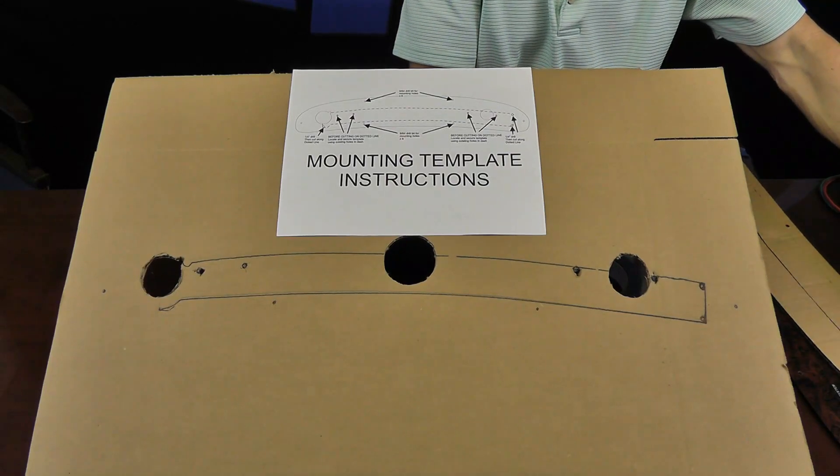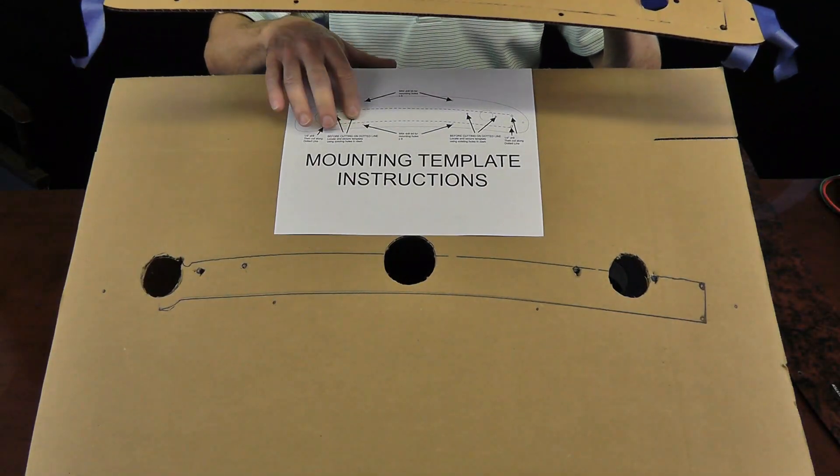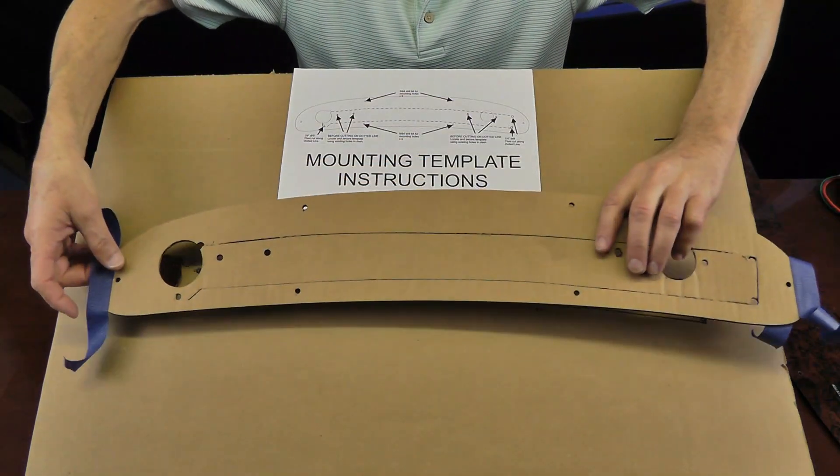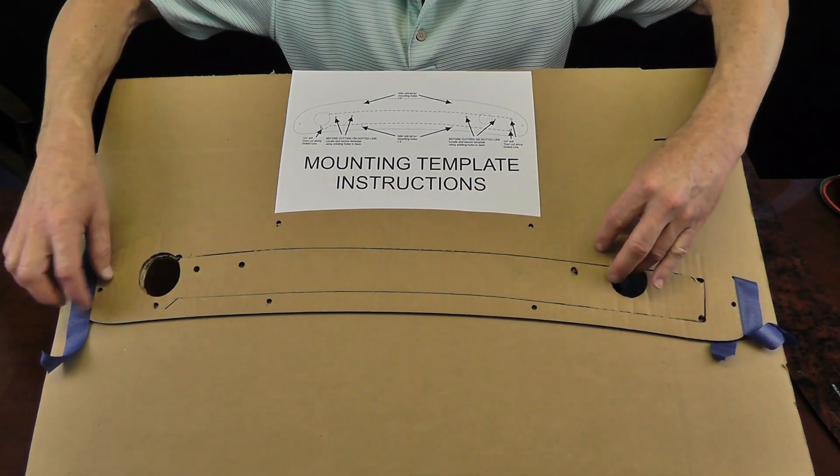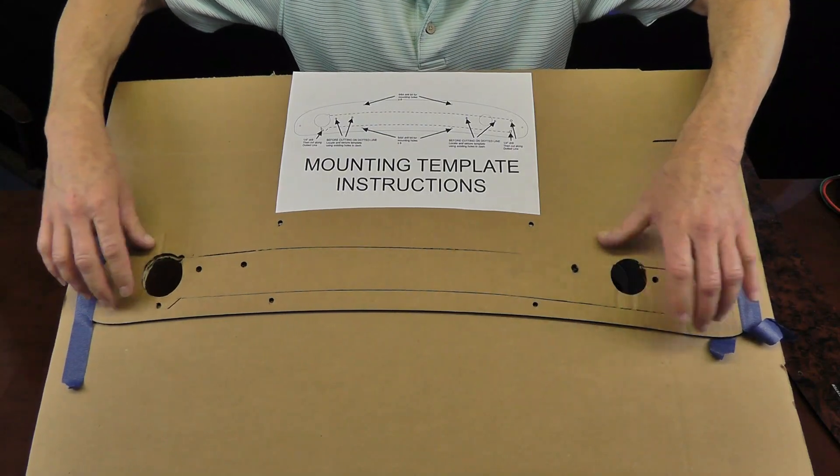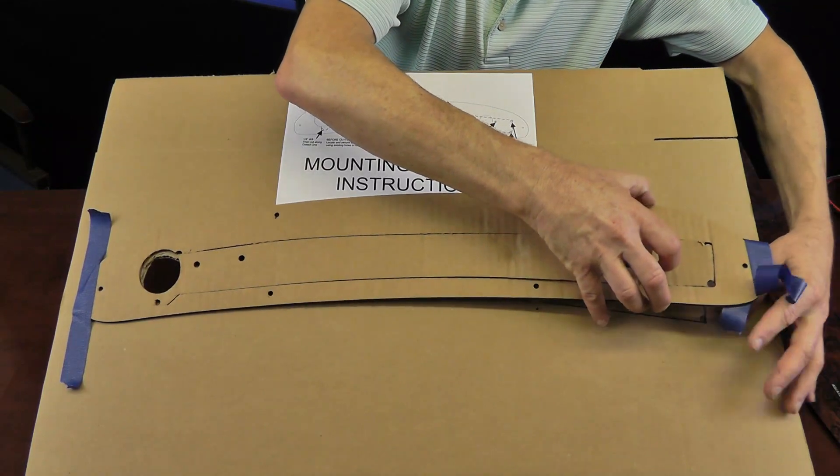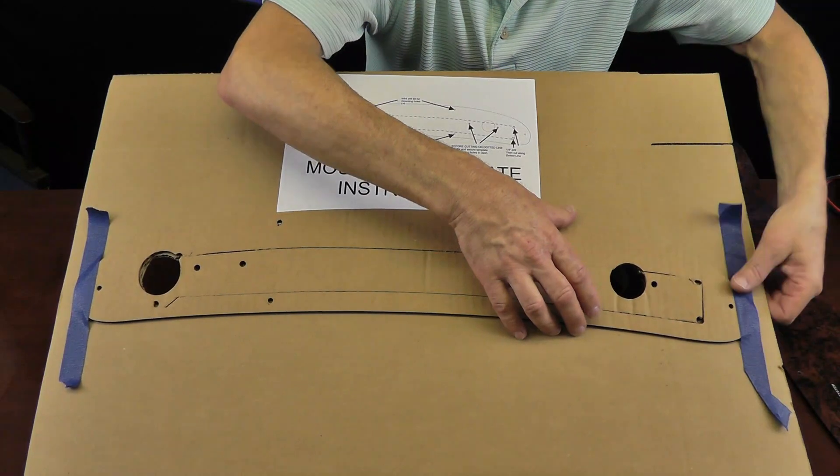Your panel set and EIM system came with mounting template instructions and a cardboard mounting template. You're going to place that mounting template, line it up with the different holes, and tape it in place.